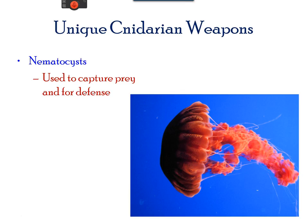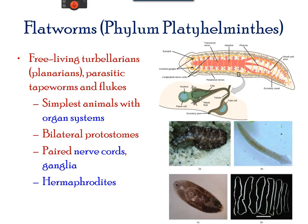Platyhelminthes includes the simplest animals that are bilateral, with the first appearance of a triploblastic layer. They are generally unsegmented and mainly flat in appearance. This group also shows the first appearance of nervous cords and ganglia, along with simple organs.